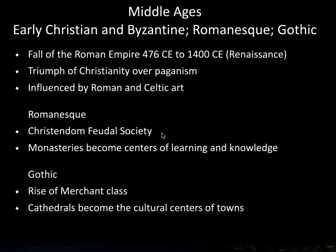These monasteries and the cathedrals and churches they built in cooperation with the power of the king became the structure that held society together. During the Gothic period, we see a rise of the merchant class and the rise of towns and villages that were independent of the king and the church, and they started to become independently wealthy through trade with other centers of learning.